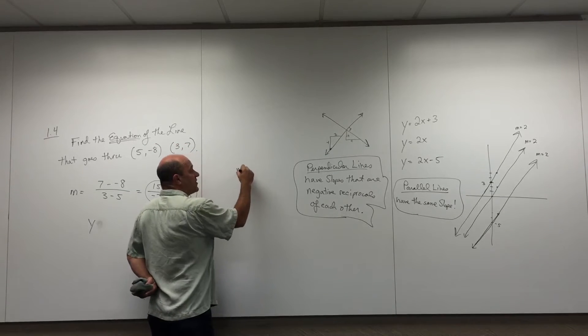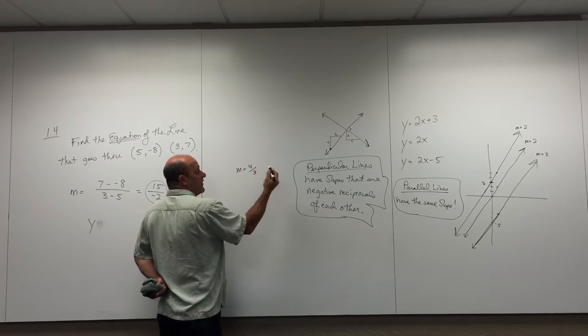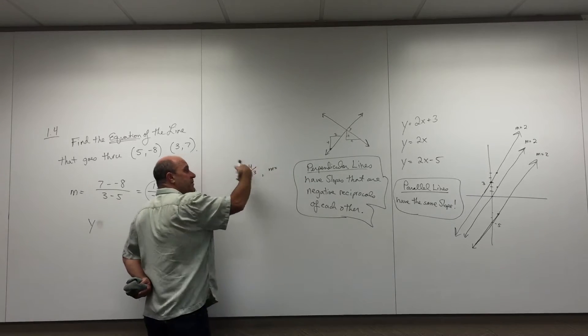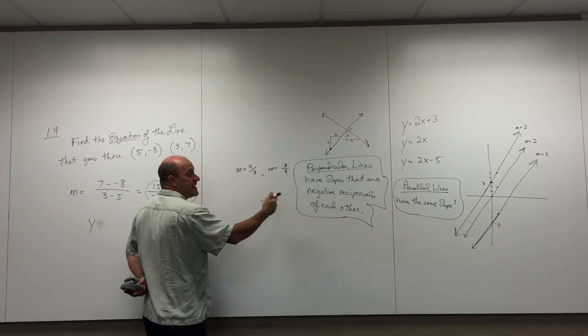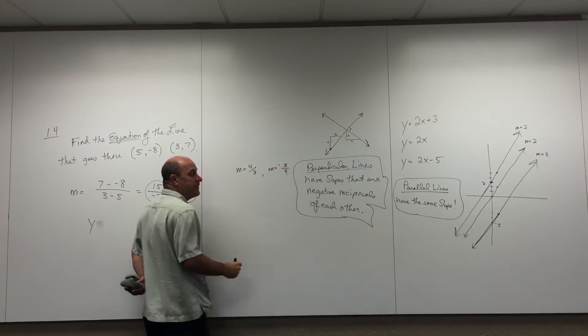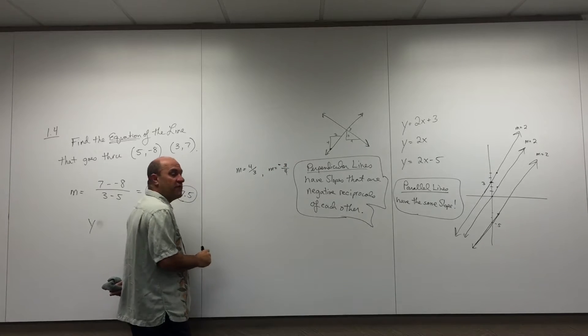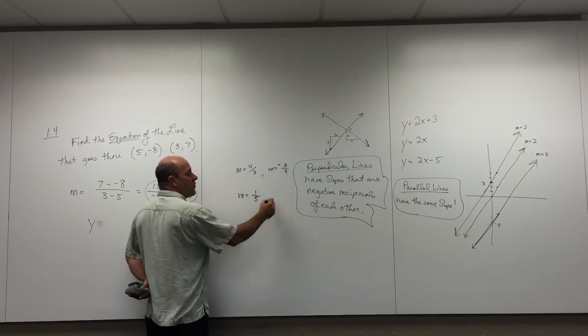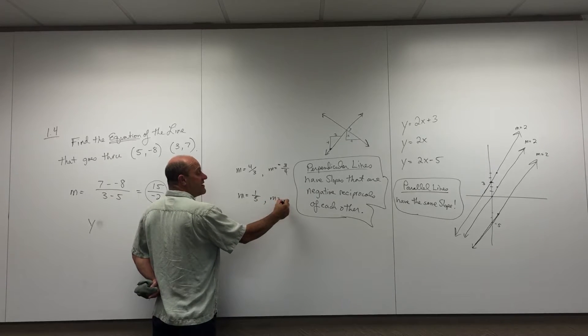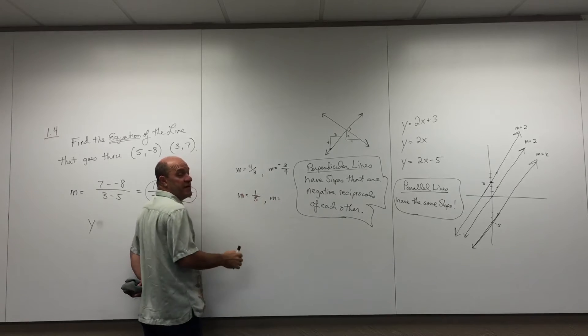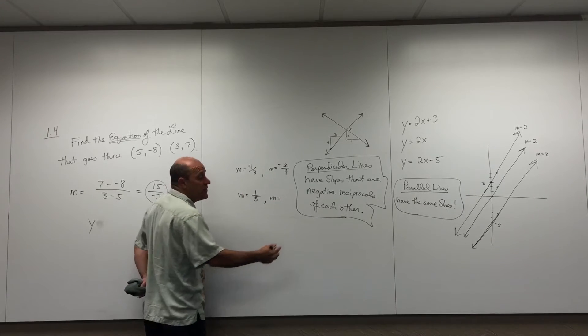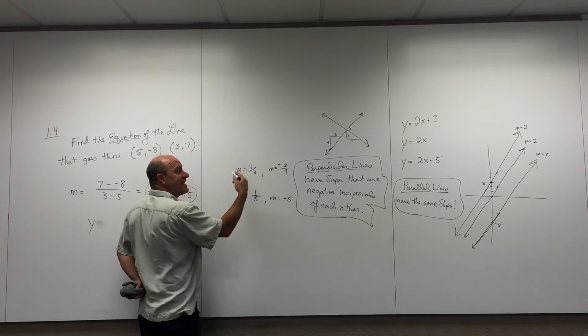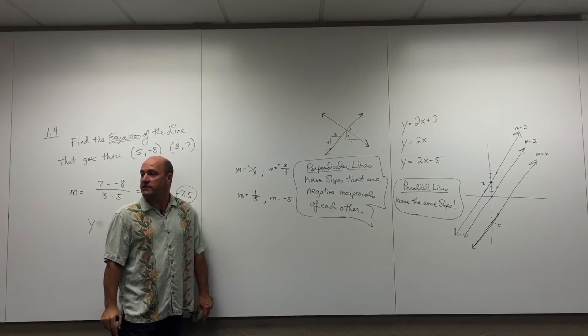So what am I saying? I'm saying if one of the slopes is four-thirds, the perpendicular slope is the negative reciprocal. The reciprocal means flip it over, and the negative means negate it. So it's negative three-fourths. If one of the slopes is one-fifth, what's his perpendicular slope? Negative five. The reciprocal would be five over one, or five, and negated would be negative five. If you find lines with these kind of slopes, they're guaranteed to be perpendicular lines.